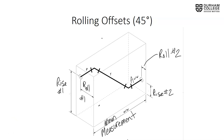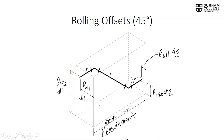We've added a few things to the drawing. To find the true offset, we first need to know our rise and roll. In the field, we'll need to take measurements — two measurements for the rise. On the left-hand side of the drawing, from the bottom of the box up to the center of the pipe is our first rise measurement, rise number one.